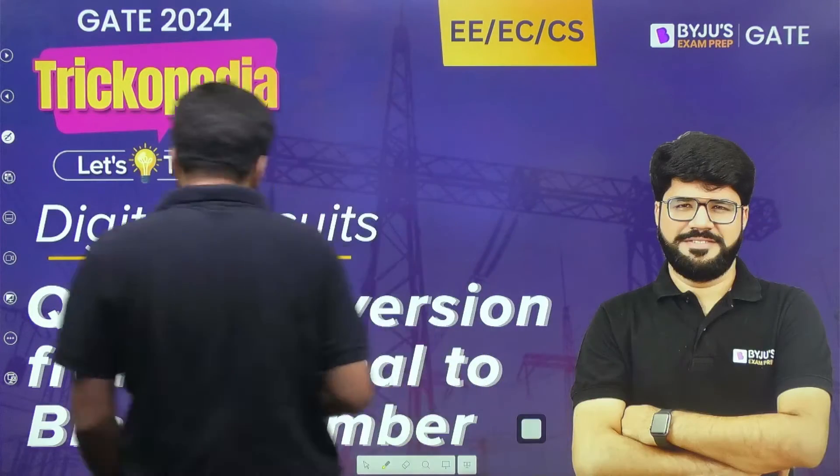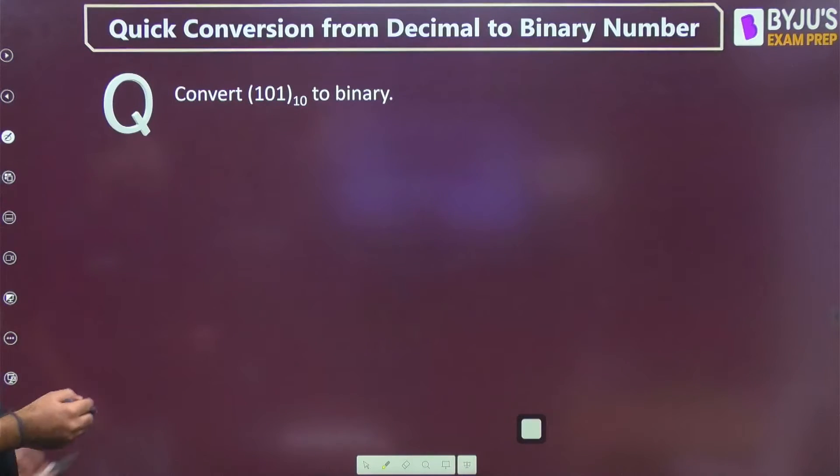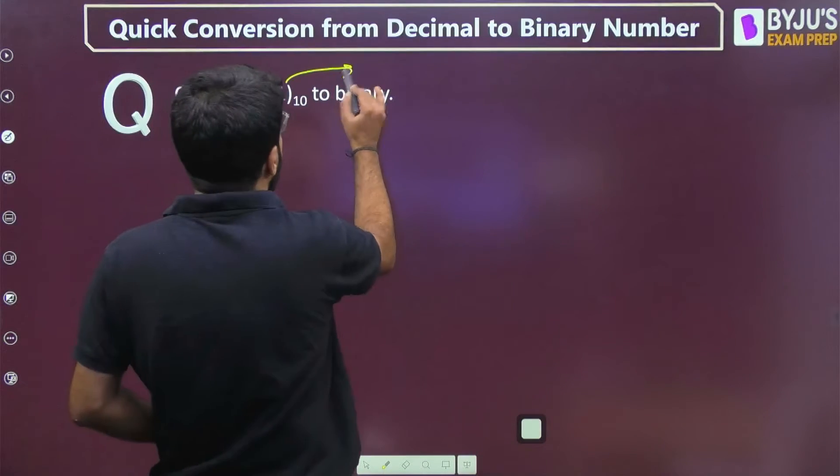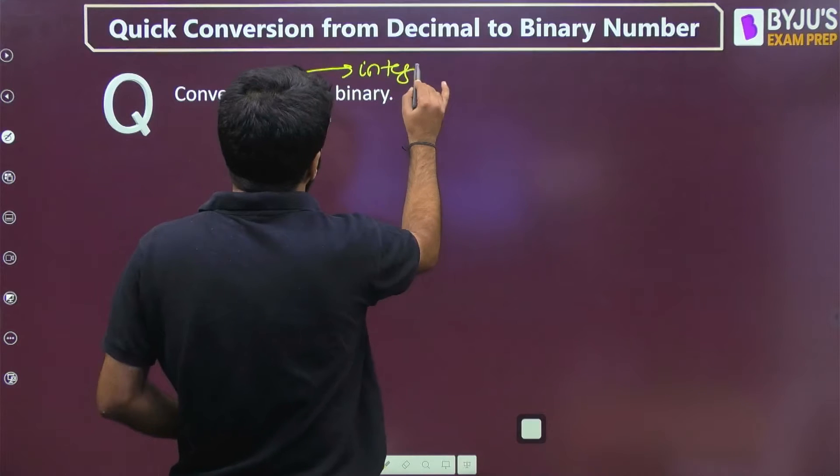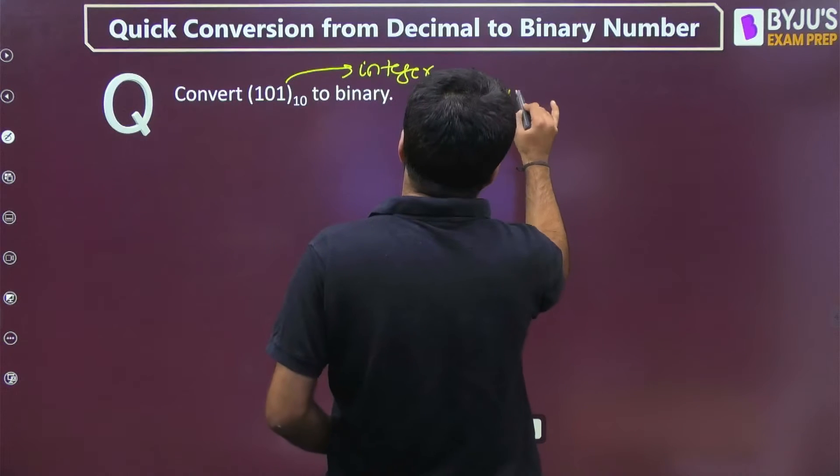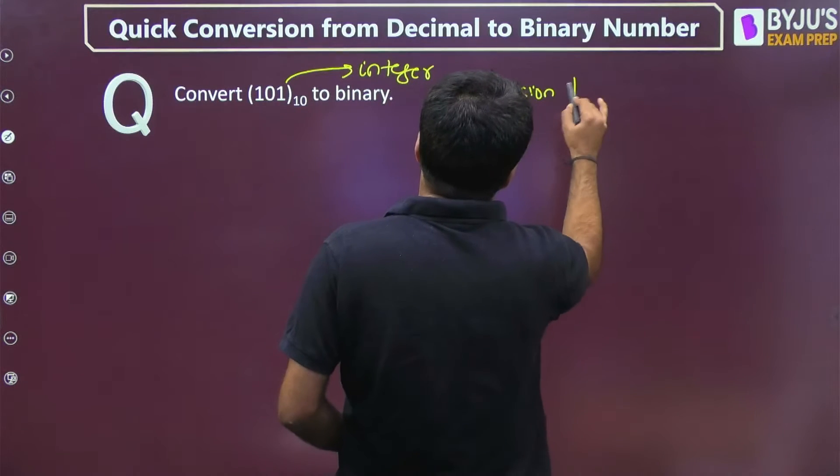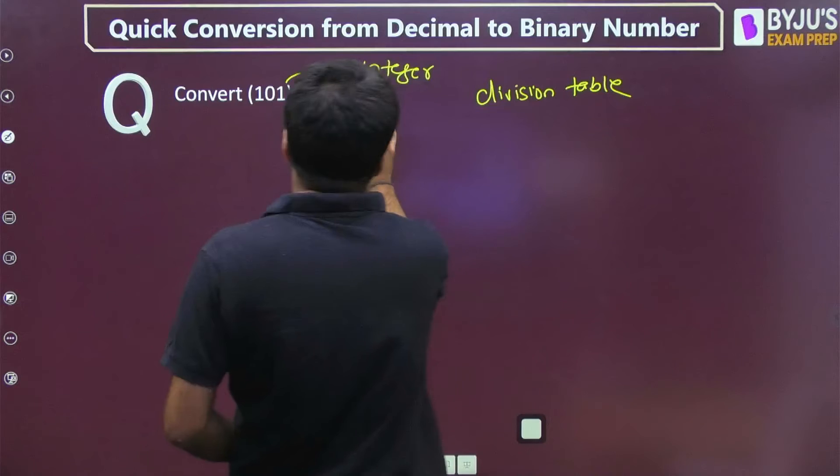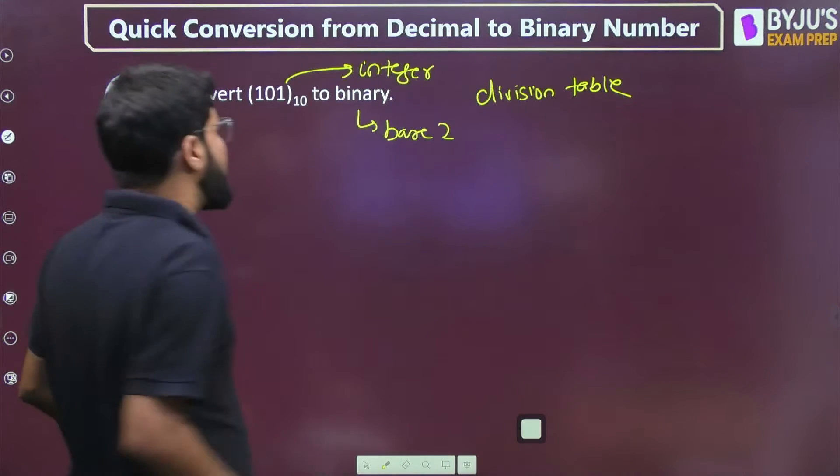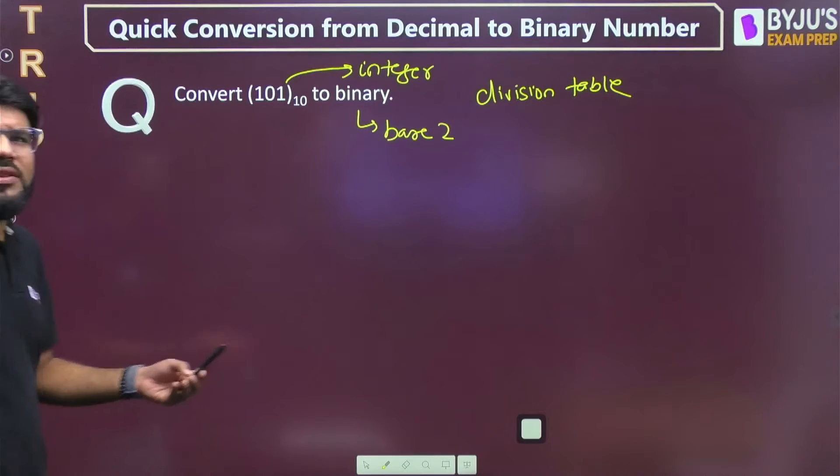Let's get started quickly. Here it is: convert 101 decimal number to binary. I have only given a number which is an integer right now. For integers, what is the method you follow? You follow the division table. You need to convert to binary, which is base 2, so you divide by 2.